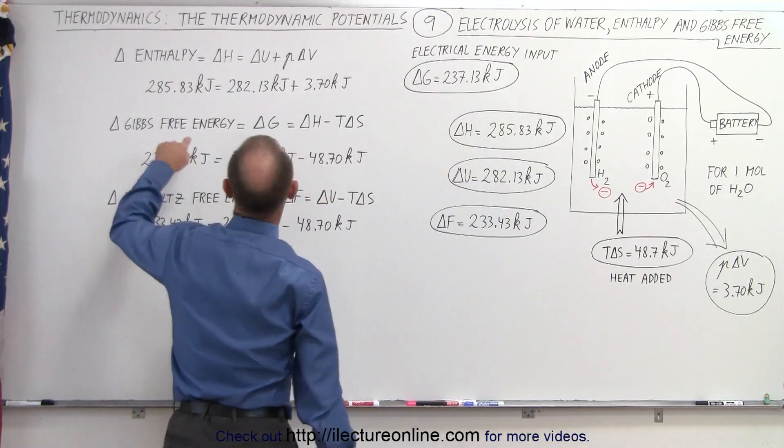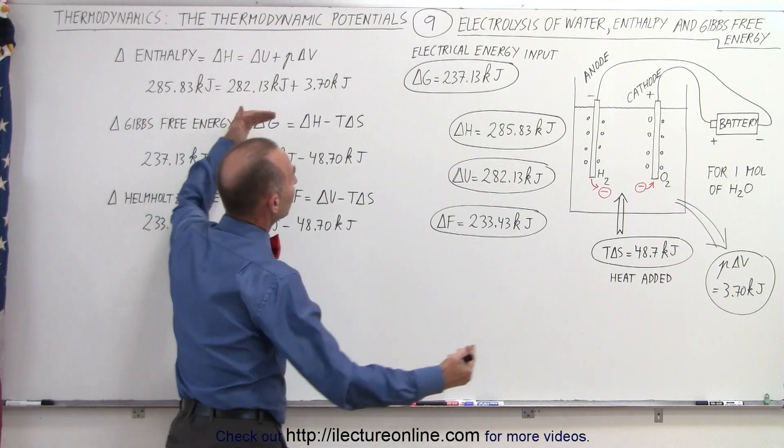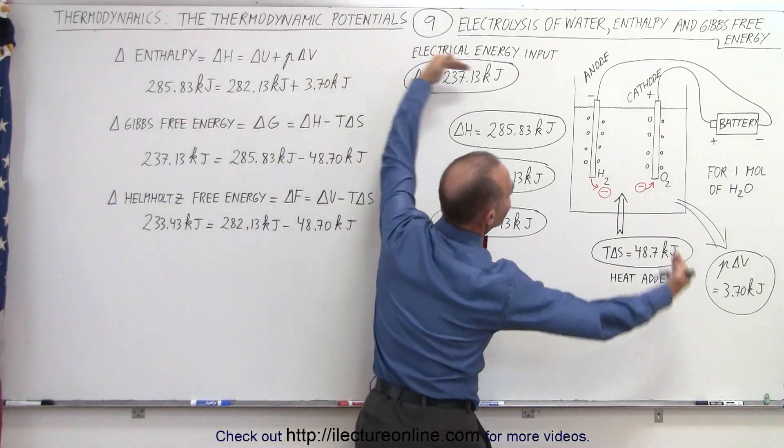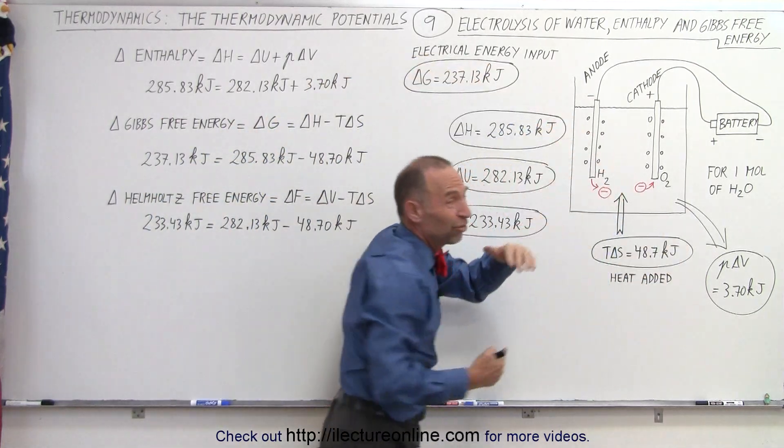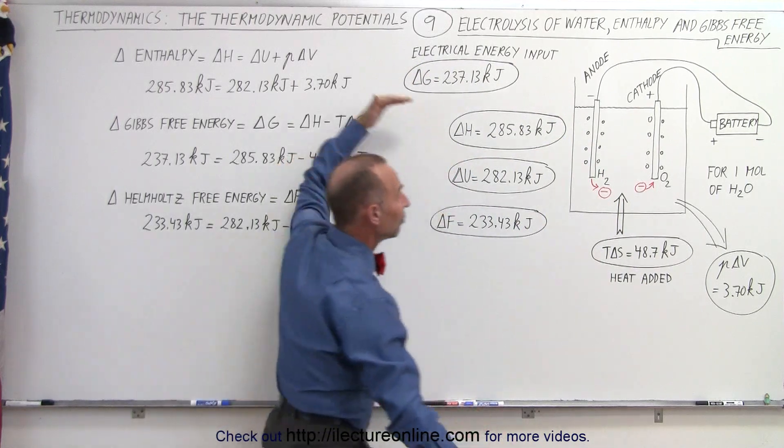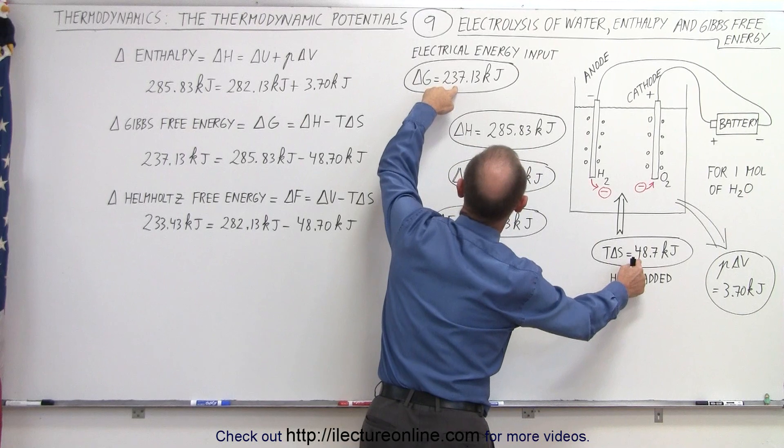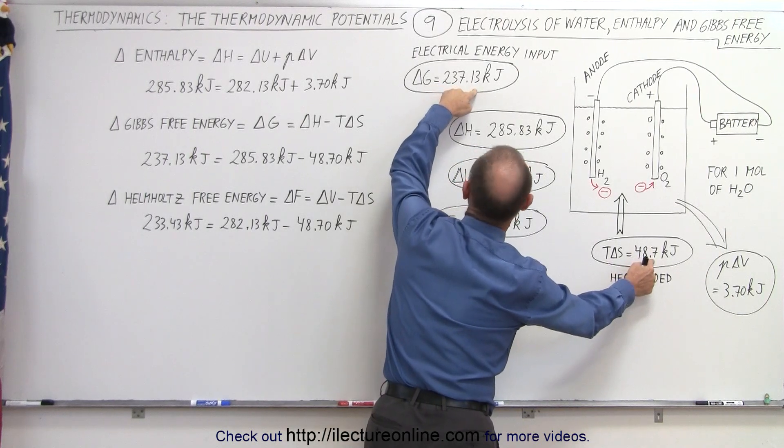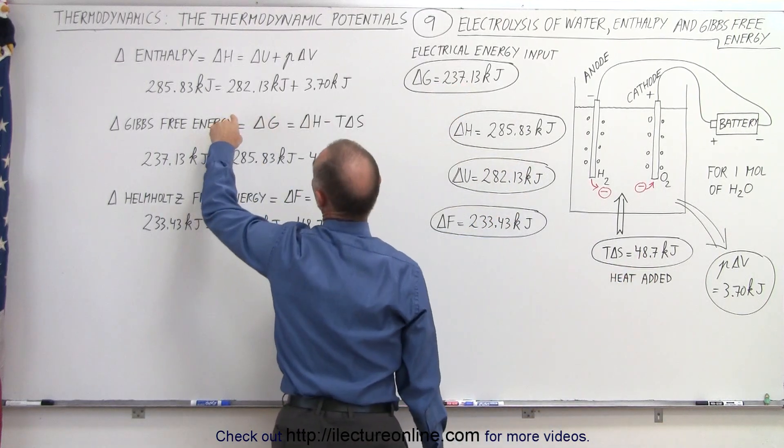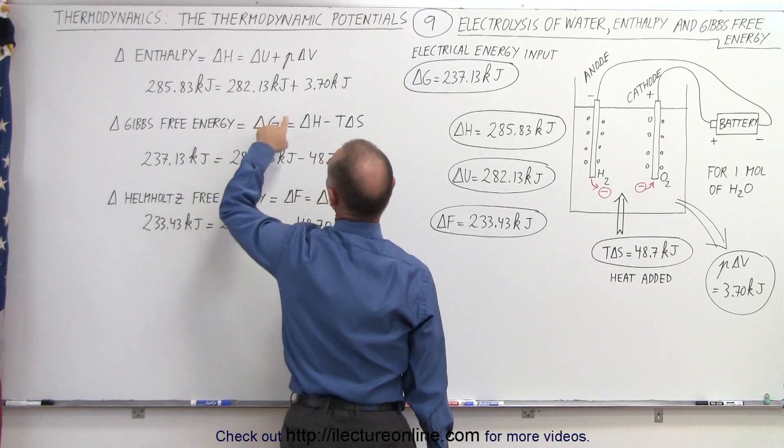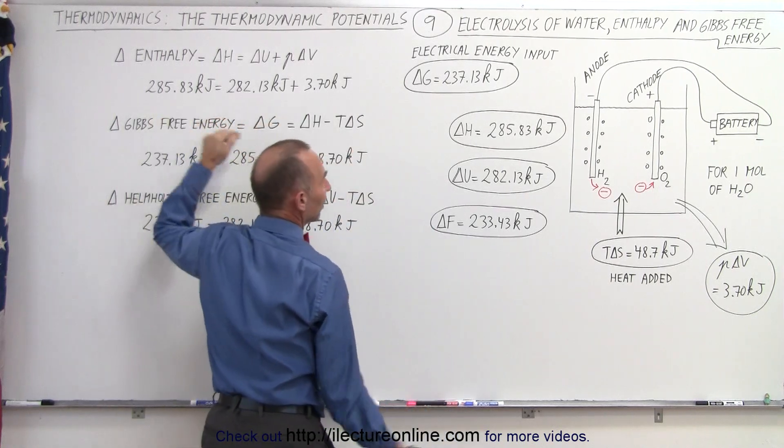Delta H will be 48.7 plus 237.13. So maybe in a way to say that is you can see that enthalpy can be defined as the total heat input in the system. Or I should say the change in enthalpy is the total input of heat. If we add 237 plus 48, that would be 285 plus 0.83. And that's what we should have right here. That's what we got here.